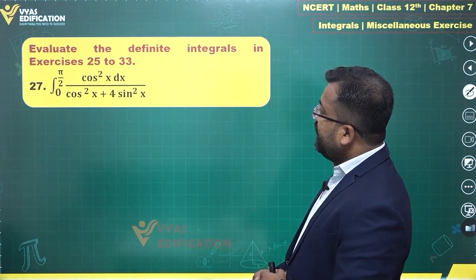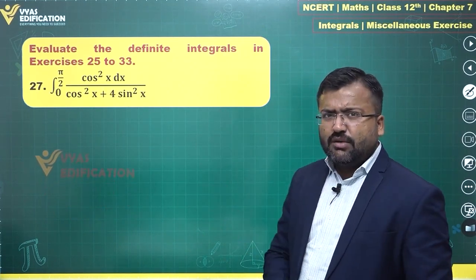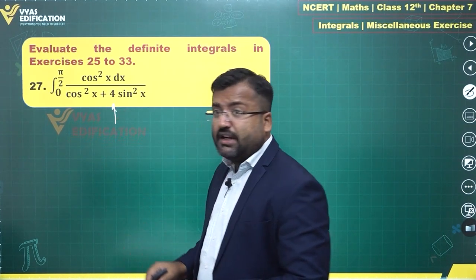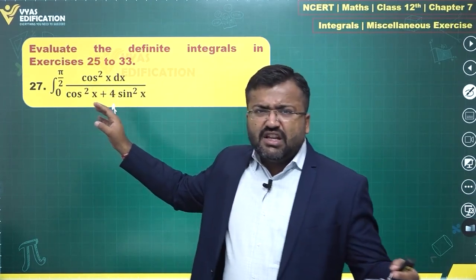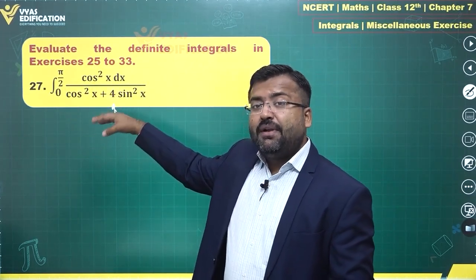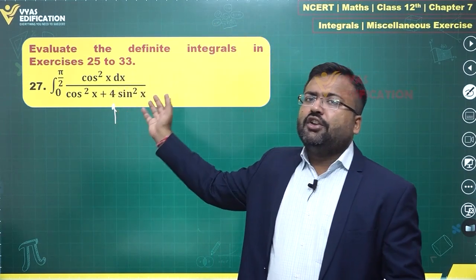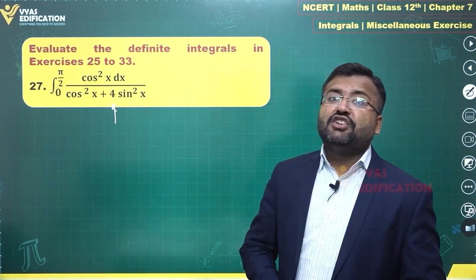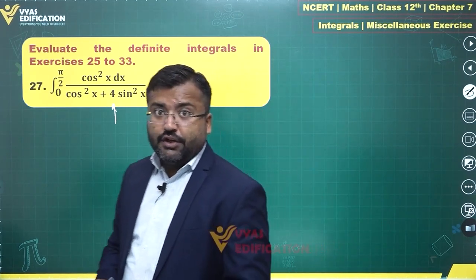One of the ideas is why not apply property 3 or property 4. Once you see cos²x and sin²x, if you realize there is a 4 over here which will create problems. Had there been no 4, these coefficients being the same, then applying that property 3, that is f(a+b-x) property, you will get the same denominator and the numerators can be added and simplified. But here it will be an issue. What will you do in such cases?